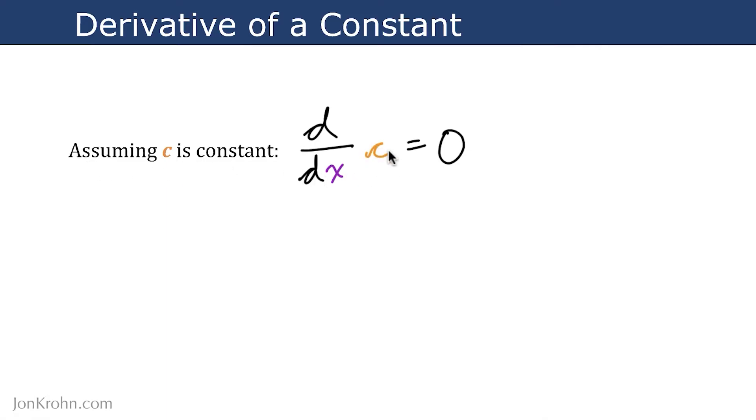Assuming c is a constant, so here where we're taking the derivative of a constant c, that constant comes out to zero.